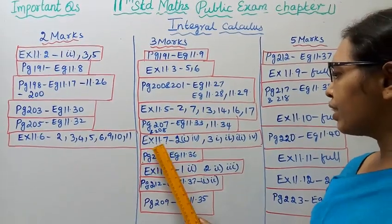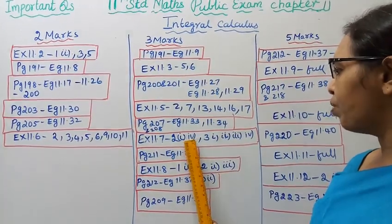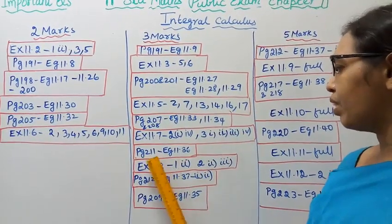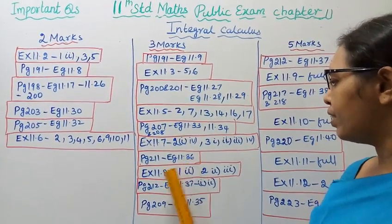Exercise 11.7: second, first to fourth subdivision. After third, first to second, third, fourth subdivision. Page 211 Example 11.36.